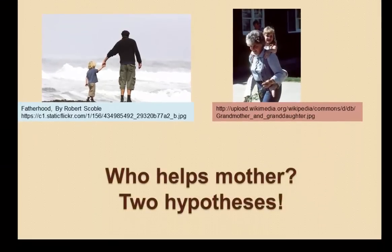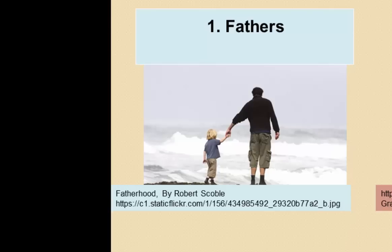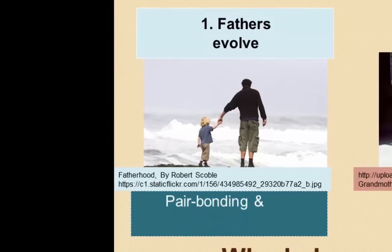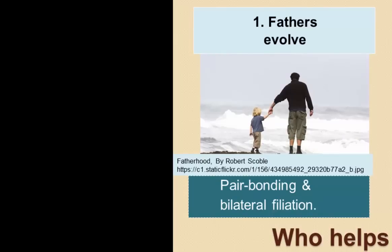This raises the question of who is there to help mothers raise their offspring. There have been two basic hypotheses, and both likely have some grain of truth. The first points to the evolution of fatherhood. Among the apes, humans are quite distinct in that some males provide substantial assistance to their mate, related to the human propensity towards pair bonding and bilateral affiliation in kinship systems — an emphasis on bringing the families of the reproductive pair together.